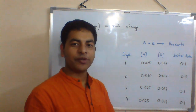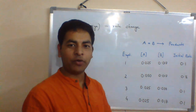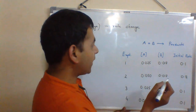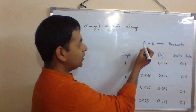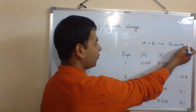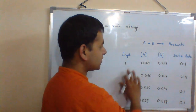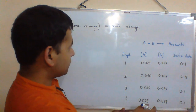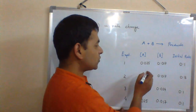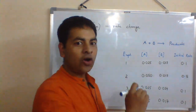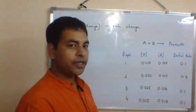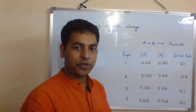Hello friends, in this video we will be solving one problem from chemical kinetics. You have been given A plus B gives products and these are some experimental values. You have been asked to calculate order of reaction and the corresponding rate expression.